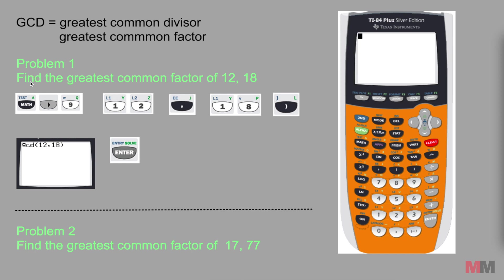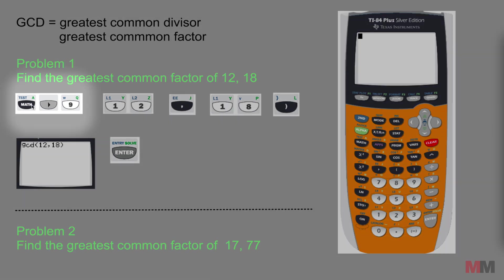First, here's problem number one. We'll use this example: find the greatest common factor of 12 and 18. That just means what is the greatest number that divides into 12 and 18. If you could do that in your head, I know some of you already know the answer, but if you're having trouble this is what you do on the calculator.